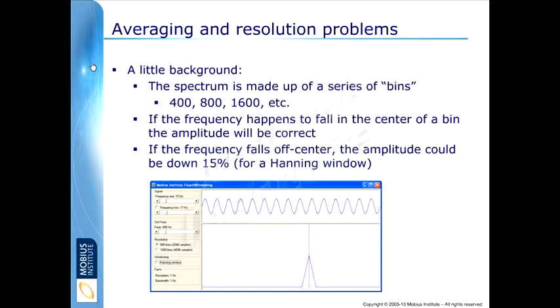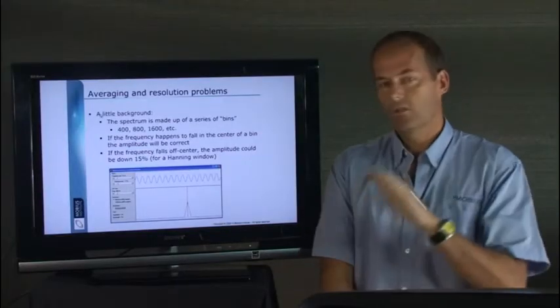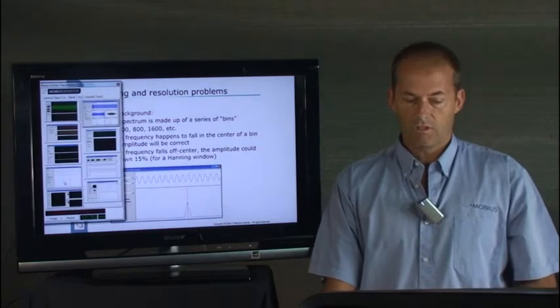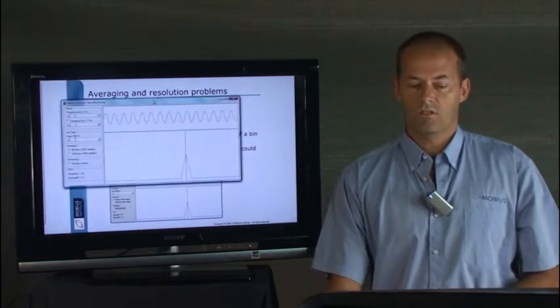So it turns out that if the frequency happens to fall in the center of one of those bins, you will get the correct amplitude. If the frequency happens to fall just on either side, you don't get the correct amplitude. In fact, for a Hanning window, it's 15% down. Now that just might seem a little bit confusing. So let me just demonstrate that to you.